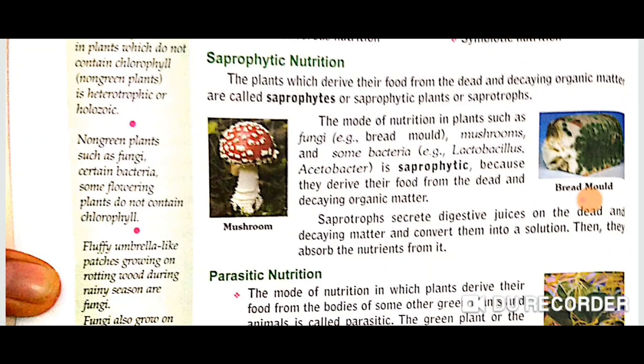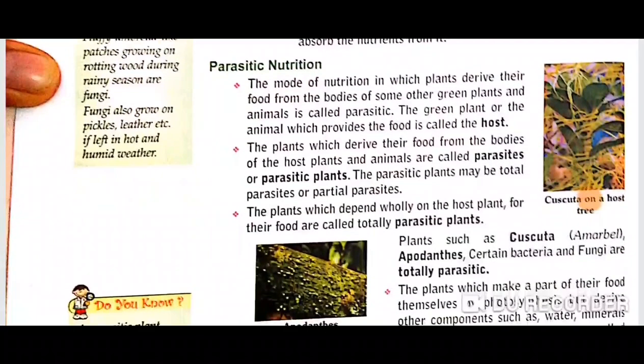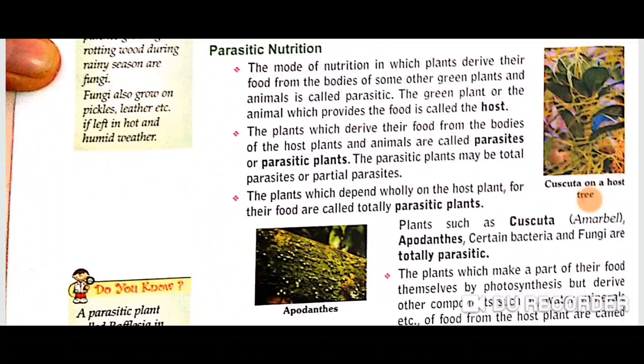In these two fungi, saprophytic nutrition is present because they derive their food from dead and decaying organic matter. These saprophytes secrete digestive juices on the dead matter, converting it into a solution. After converting the dead matter into solution, they absorb the nutrients from it. The second type of heterotrophic nutrition is parasitic nutrition.